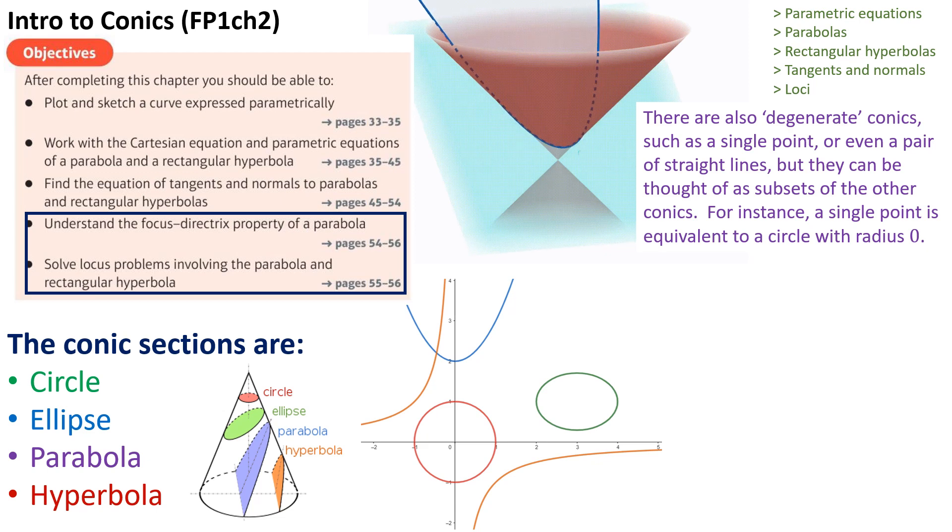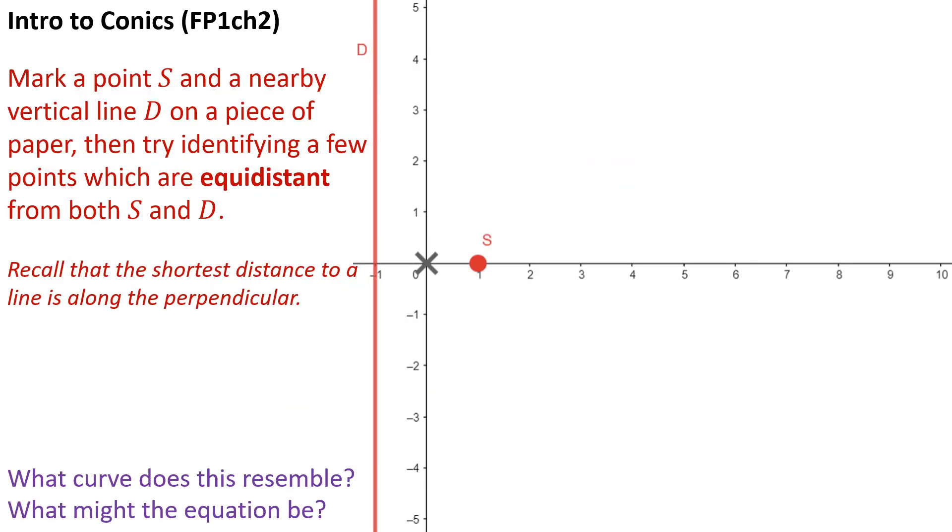As I say, they have lots in common with each other - all sorts of interesting properties algebraically and geometrically. We're going to begin by looking at the parabola and see if we can identify some interesting properties straight away. The first property I want to investigate is something clever that involves a point and a line. I want to work out which curve I end up with if I follow this particular rule: I want all the points that are the same distance from a particular point S and a particular vertical line I've chosen, labeled D.